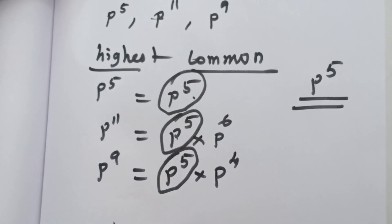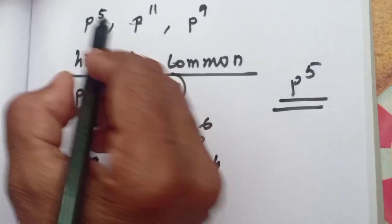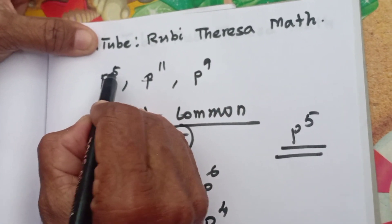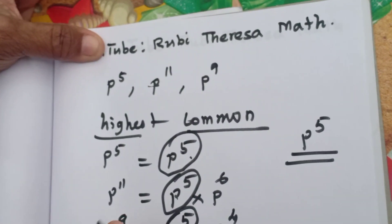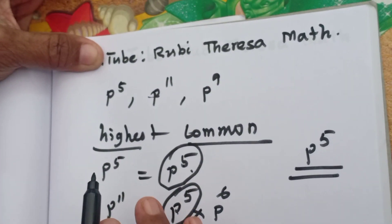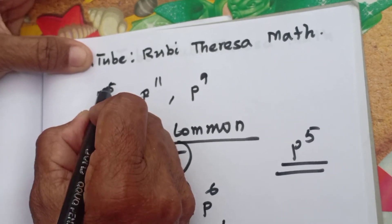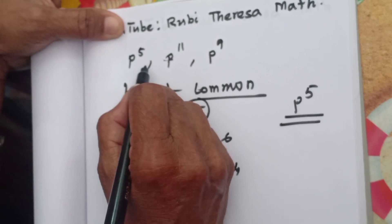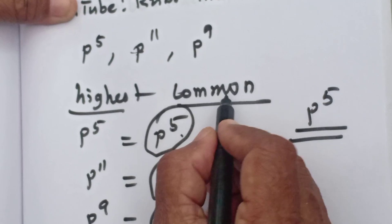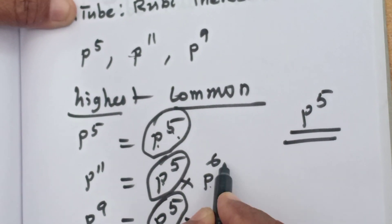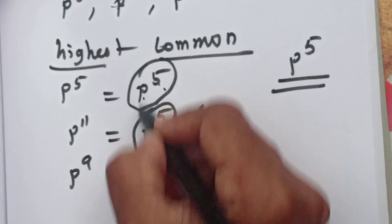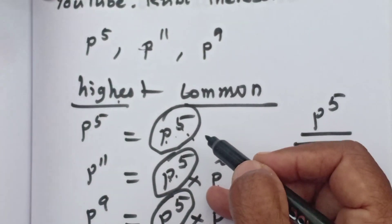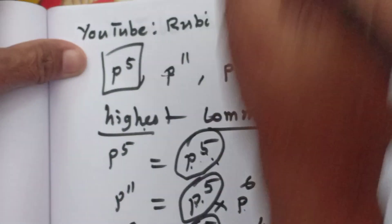So p to the power of 5 is the GCD. If the base is the same, take the common base with the lowest power. The highest common with the lowest power — for p to the power of 5 and p to the power of 5 into p to the power of 6, the highest common of p to the power of 5 is the GCD.